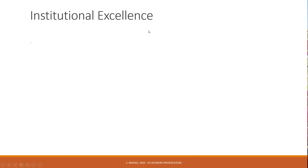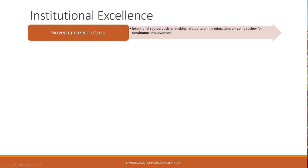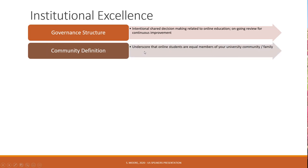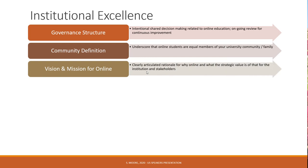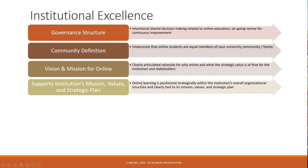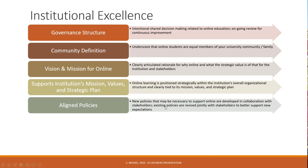The elements of institutional excellence include having great governance structures with shared decision-making and ongoing review for continuous improvement, and inclusion — having a shared community definition, in particular one that underscores that online students are equal members of your university, community, or school. Having a very clear vision and mission for online, clearly articulating the rationale for why online and what the strategic value is for the school, district, or institution. Online learning should clearly support the institution's or school's mission, values, and strategic plan. Getting those policies aligned — existing policies may need to be revised and new policies may need to be developed.